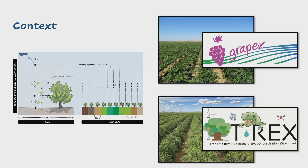For context, this all started with the project GRAPEX back in 2013, which ultimately led to the project called TREX. We love our acronyms within the ARS. TREX started because we wanted to better model satellite-based ET over these very unique canopy structures, specifically wine grape vineyards in GRAPEX and tree perennial crops, most notably almond orchards in TREX.